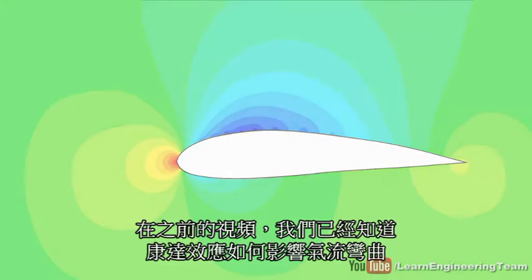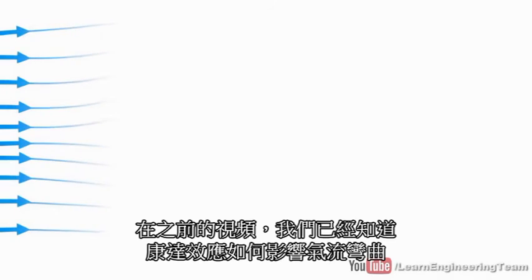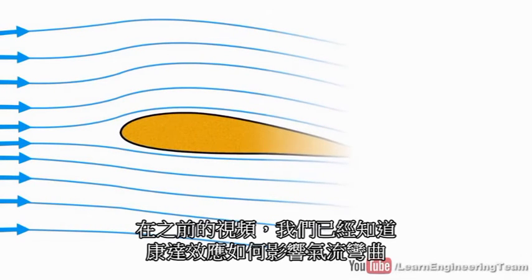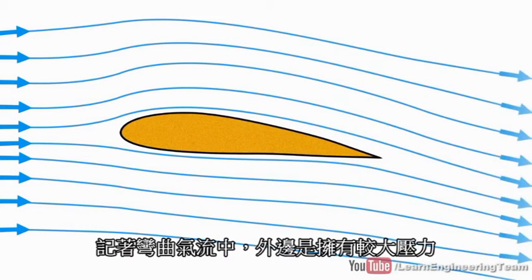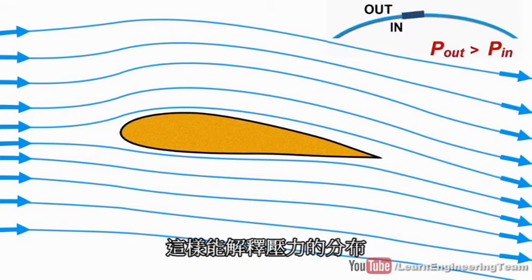In the first part of the airfoil video, we learned that the flow gets curved as shown due to the Coanda effect. You can explain the pressure distribution by keeping in mind that in a curved flow, pressure is higher at the outside.